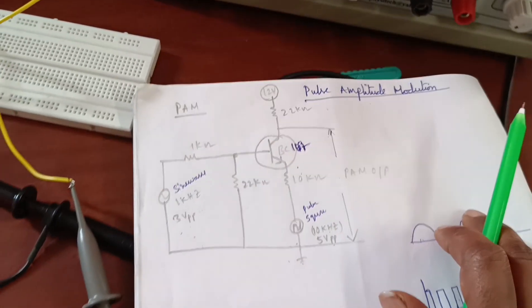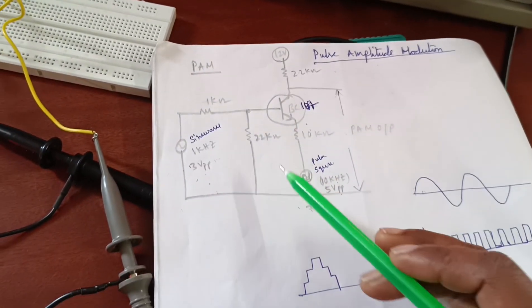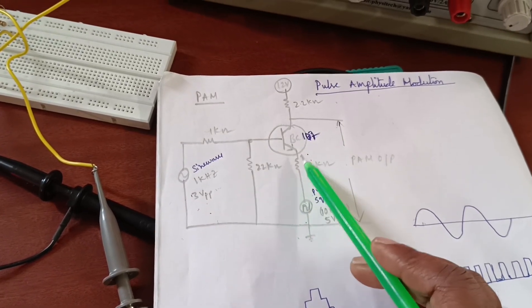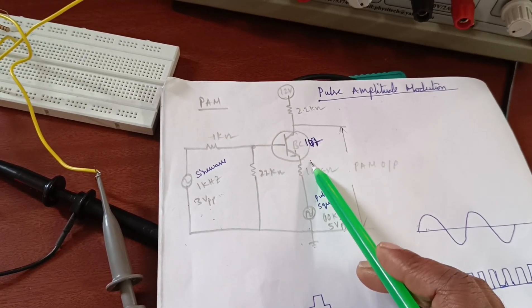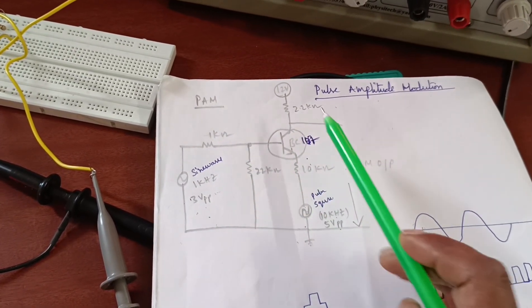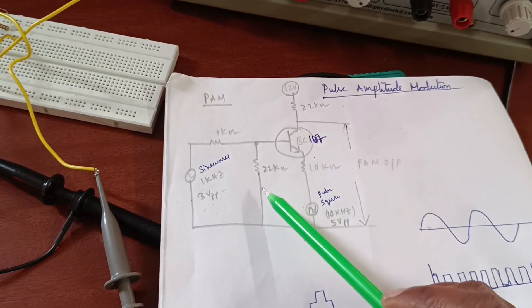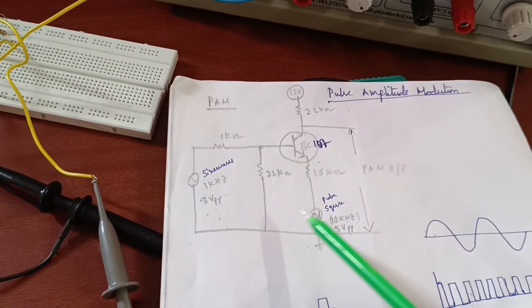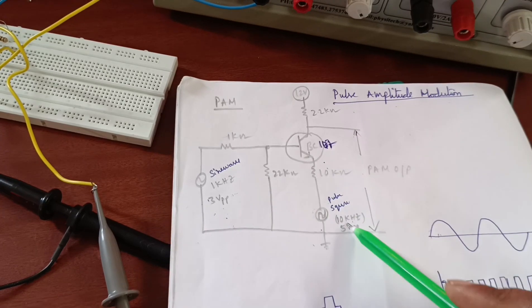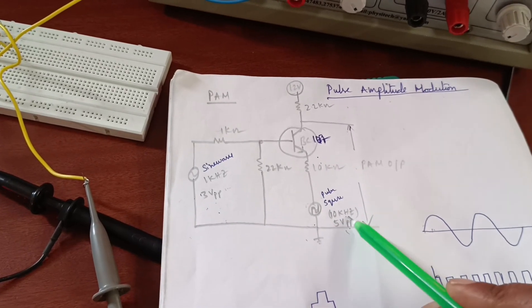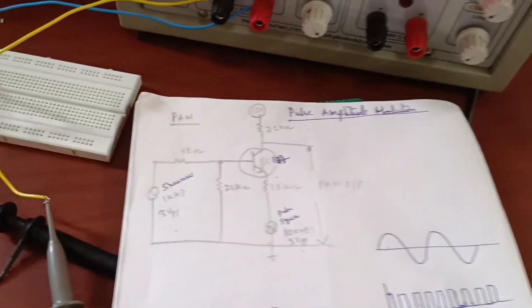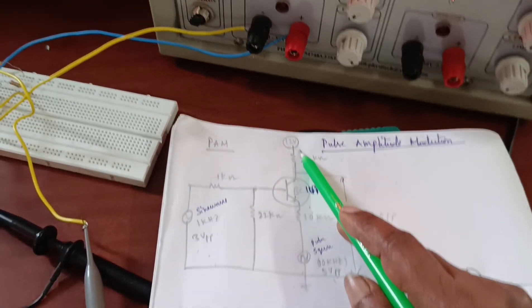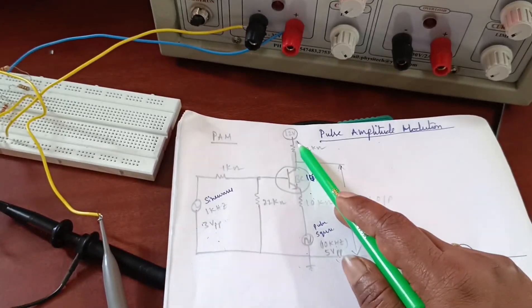Experiment name: Pulse Amplitude Modulation. This is the circuit diagram for pulse amplitude modulation. I am using a BC107 transistor and different resistors — 2.2 kilo ohm, 10 kilo ohm, 22 kilo ohm, and 1 kilo ohm. There are two function generators: one for the message signal and one for the carrier signal. The output is observed from the collector terminal, and a 12 volts DC supply is applied using RPS.